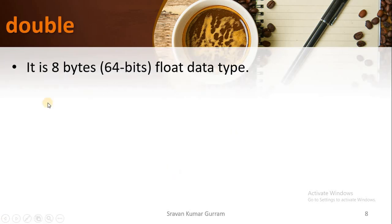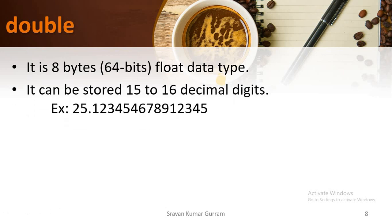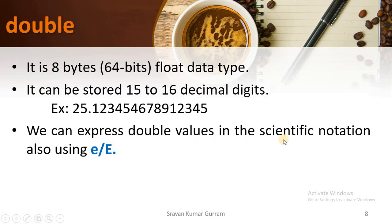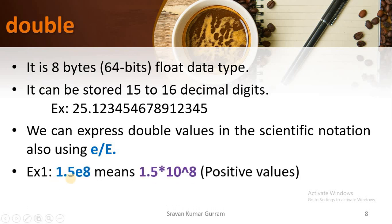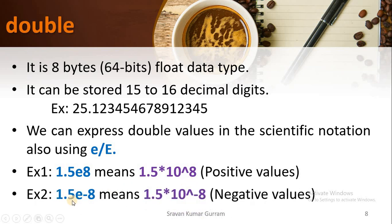The next category is double type. It occupies 8 bytes of memory. It can store 15 to 16 decimal digits — you can observe how much of a lengthy value we can store. Generally, double is used in scientific calculations. Whenever you want to maintain a more accurate value, use double type. We can also express double values in scientific notation using lowercase e or uppercase E. For example, 1.5e8 means 1.5 into 10 to the power of 8. We can store very large values using scientific notation, and negative exponents like e-8 mean 10 to the power of minus 8.